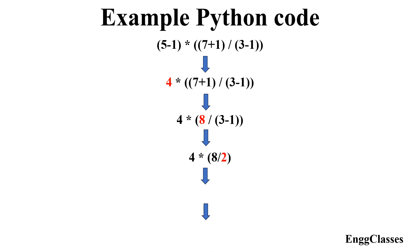We now have the reduced expression. Next, 8 divided by 2 — inside the remaining parenthesis — gives 4.0. Finally, 4 multiplied by 4.0 gives 16.0. This is the concept of precedence, explained with the help of an example.